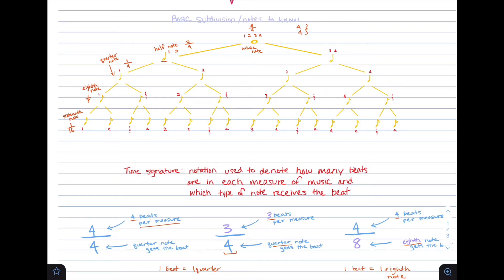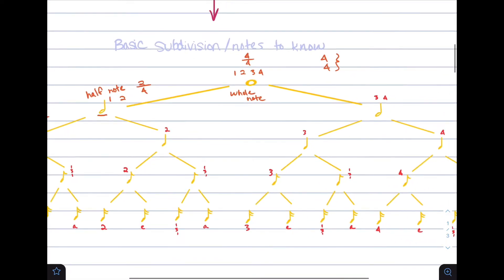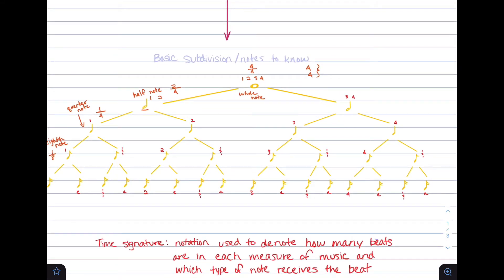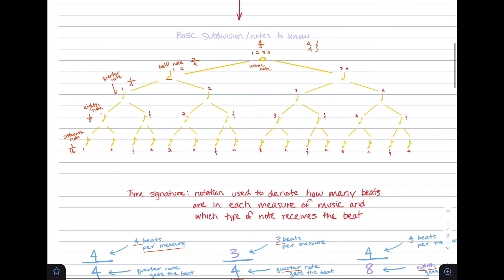When counting each one of these notes: a whole note is counted as one, two, three, four. Two half notes would be counted as one, two, three, four. Quarter notes: one, two, three, four. Eighth notes: one and two and three and four and. Sixteenth notes: one-e-and-a, two-e-and-a, three-e-and-a, four-e-and-a.